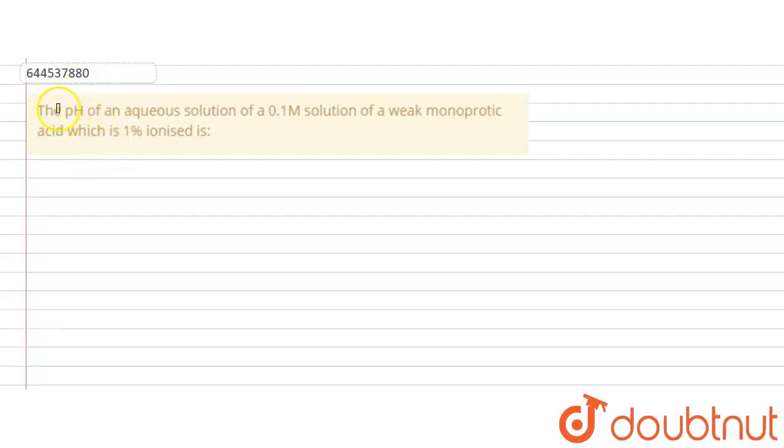In this question it is given that the pH of an aqueous solution of 0.1 molar solution of weak monoprotic acid which is 1% ionized. So it's a weak monoprotic acid, means HA is a weak monoprotic acid.